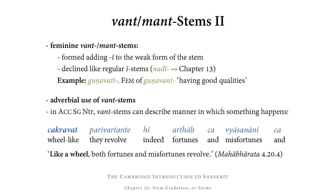Want stems specifically — not mant stems — can be used adverbially. What happens is that in the accusative singular neuter, ending in vat, want stems can describe the manner in which something happens. So for example, cakravat would be cakra (wheel) plus vat (like), meaning 'wheel-like' or 'like a wheel.'